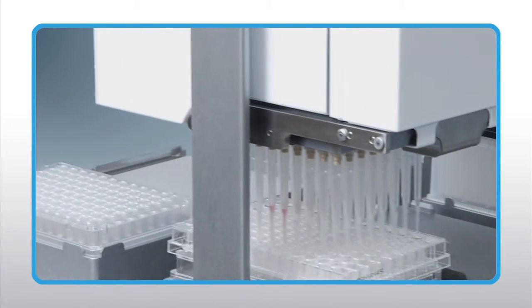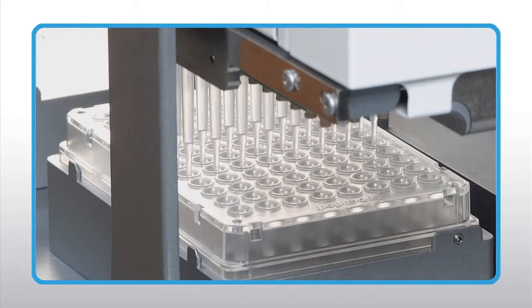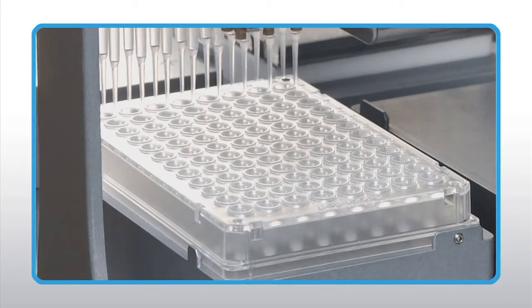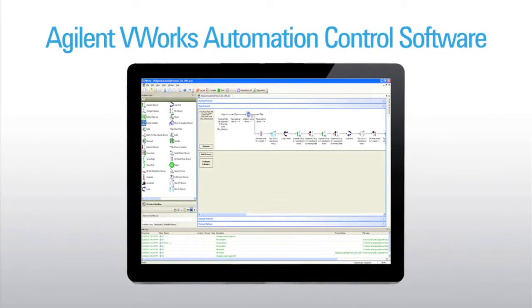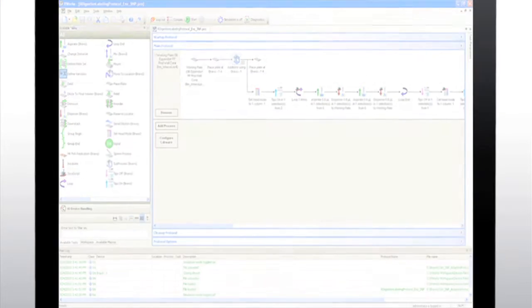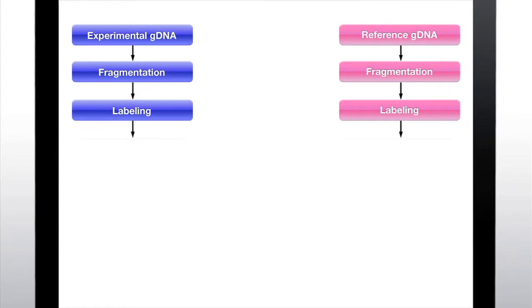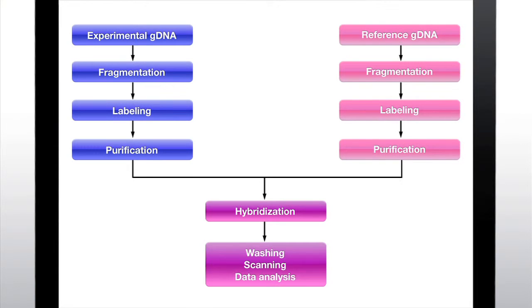A new method was developed to automate the CGH sample preparation in a 96-well format by using the Agilent Bravo automated liquid handling platform. The V-Works automation control software provides protocols for the fragmentation, labeling, purification, and pre-hybridization setup.